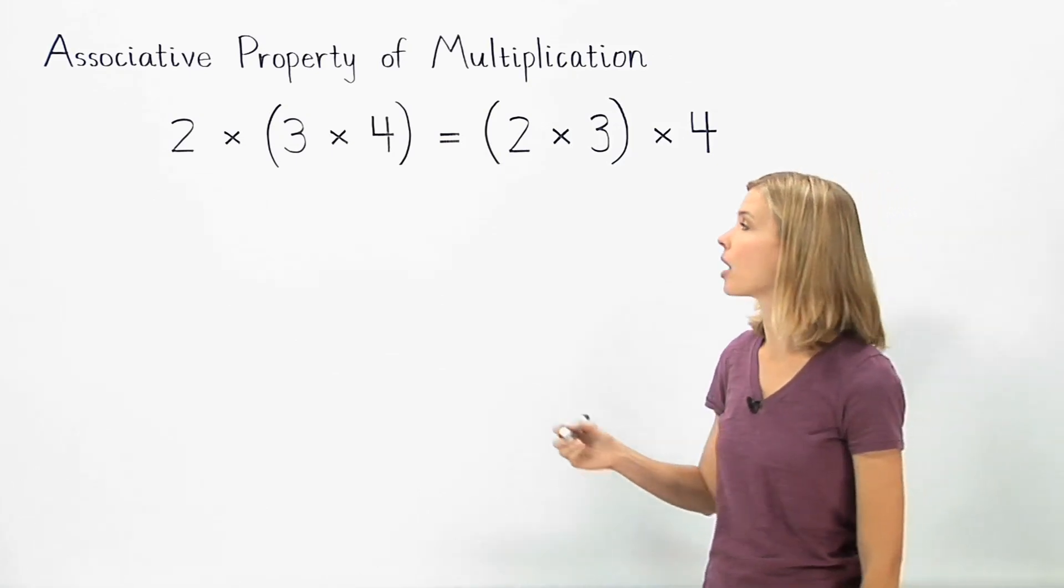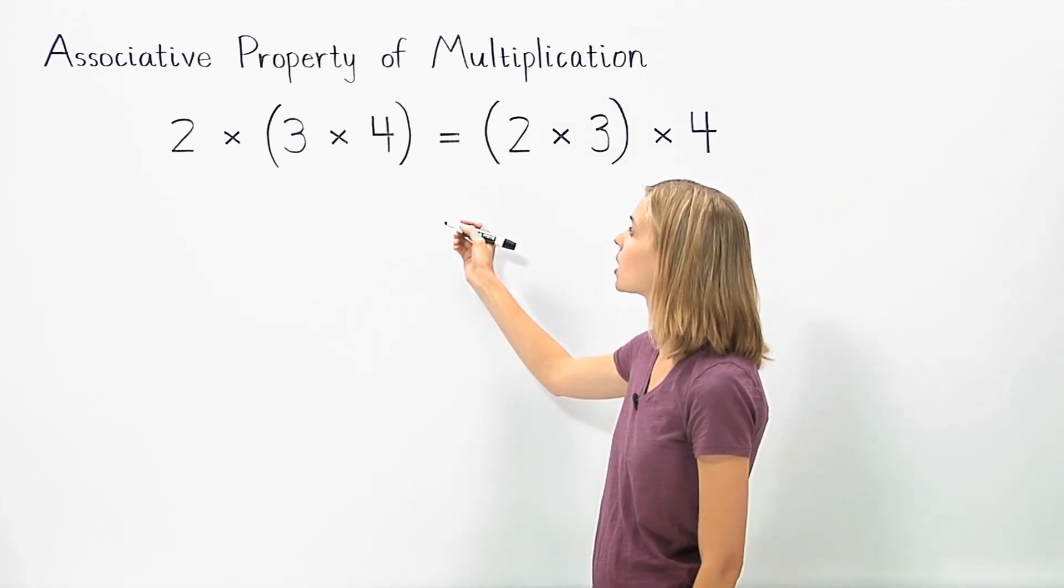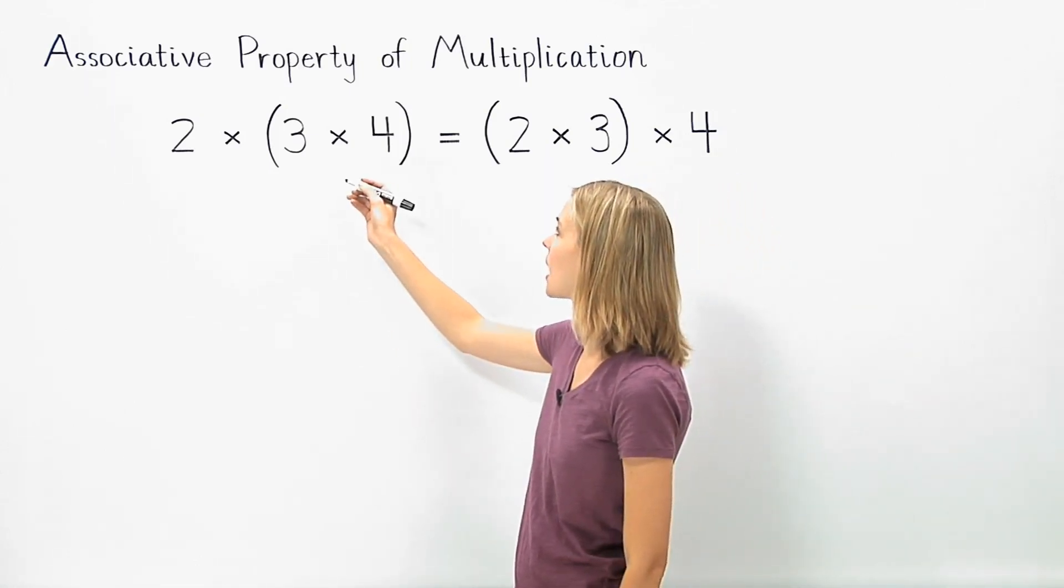Notice that the factors are the same on both sides of the problem: 2 times 3 times 4. However, on the left we group the 3 times 4,